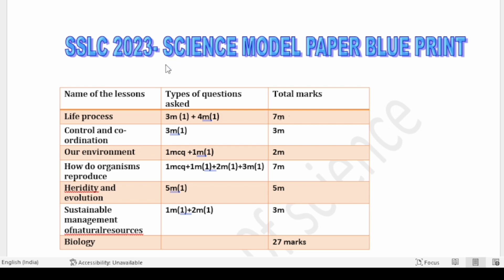In this video I am discussing about the blueprint of the model paper — which lessons in science have how many marks allotted in the paper. This will be very helpful for you to get an idea of which lessons carry how many marks. Most of the time the model paper blueprint remains the same for the final exam, though types of questions may vary, the total marks per lesson stay consistent.